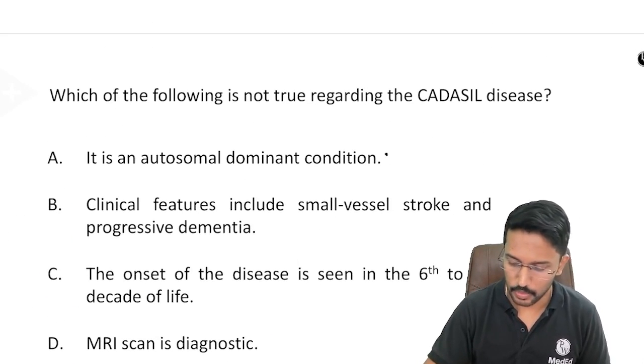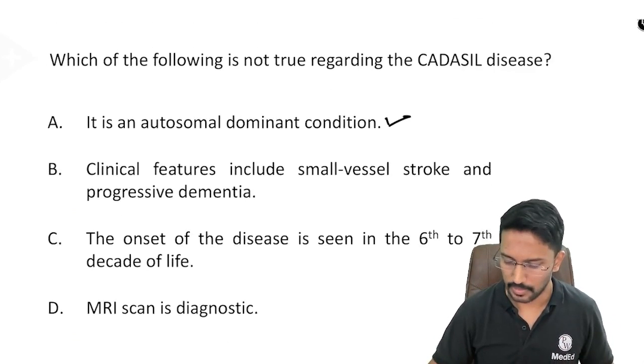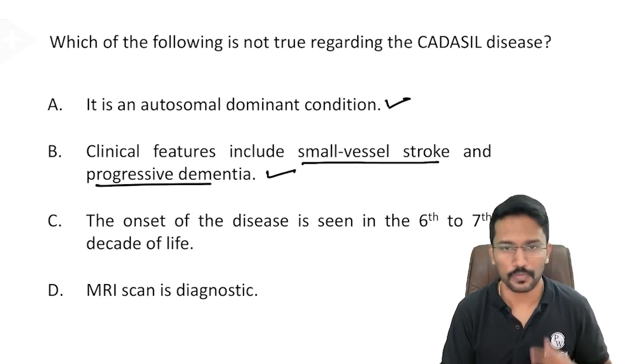Now let us look at the options. It is an autosomal dominant condition, it is embedded in the name itself. Clinical features include small vessel stroke and progressive dementia, that is true.